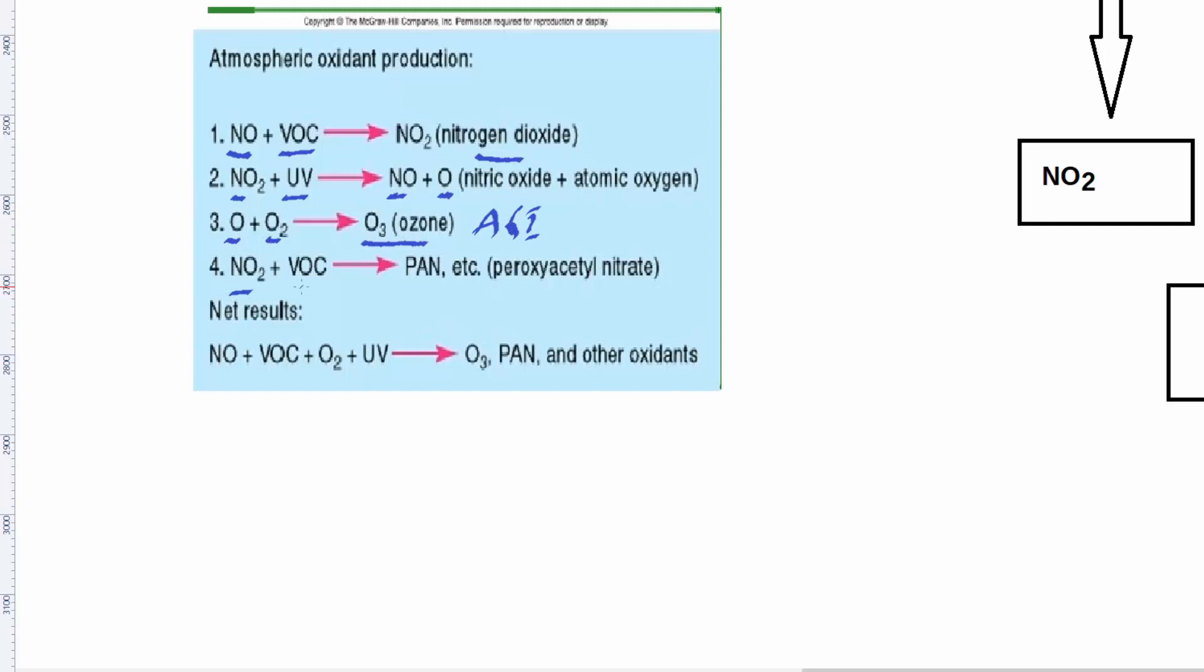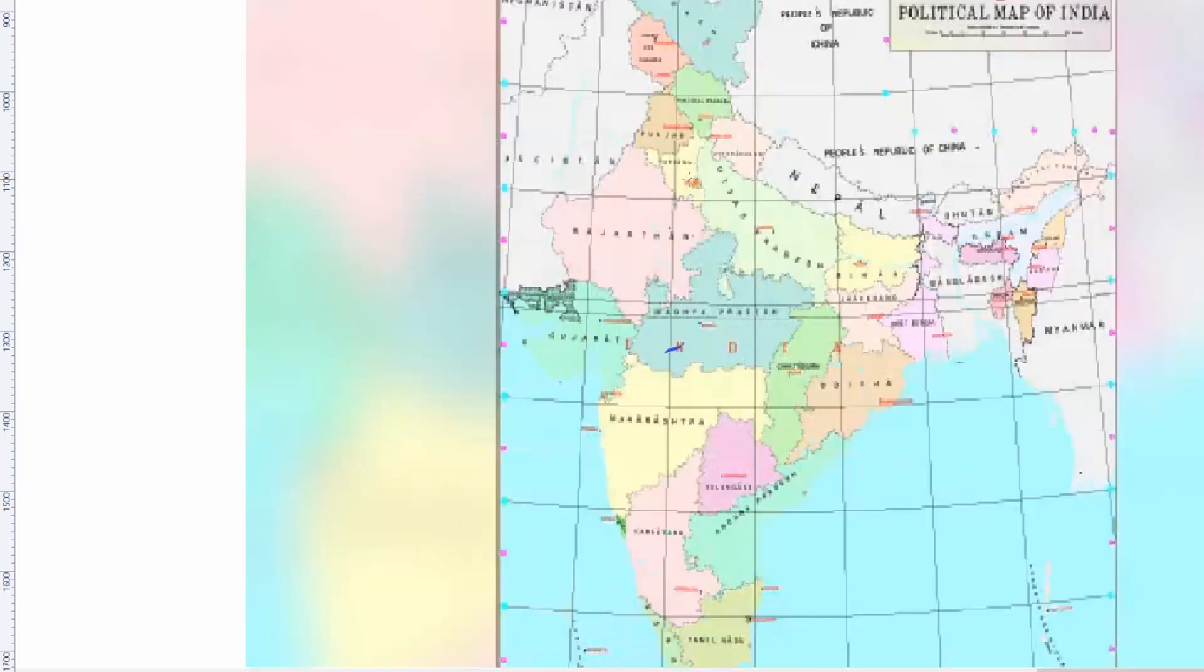Then again nitrogen dioxide reacts with volatile organic compound, means there is a cycle going on. First nitrogen oxides react with VOC forming nitrogen dioxide. This nitrogen dioxide then again reacts with VOC forming PAN which is peroxyacetyl nitrate. So the net result is nitrogen oxide plus volatile organic compound plus oxygen in the presence of sunlight giving ozone and PAN and other oxygens.